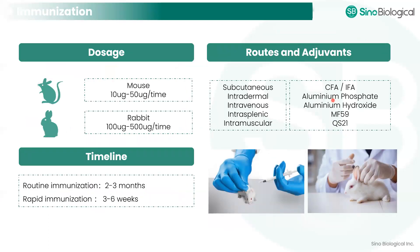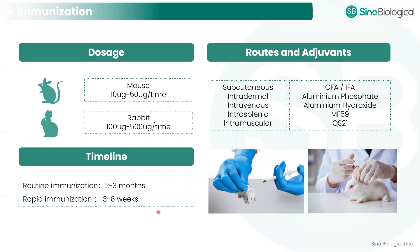After obtaining high-quality antigens, we have to decide the immunization procedures, including the dosage, routes, adjuvants, and timelines. For example, if we want to generate antibodies in a short period of time, we can choose rapid immunization, because rapid immunization only takes about three to six weeks compared with the regular immunization process, which is about two to three months.